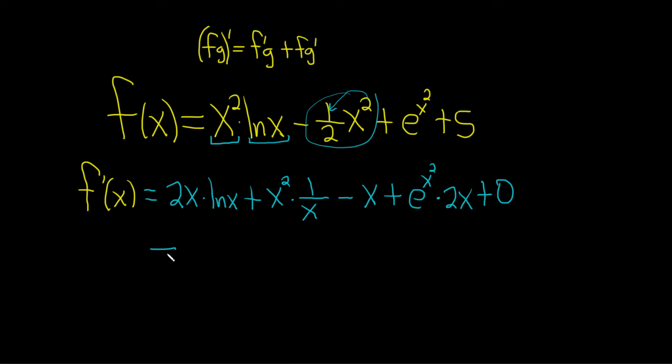So the final answer, let's clean it up. Oh look, this is x, right? So these will cancel. So you get 2x ln(x). x minus x is gone. These are gone. And then you get plus 2x e to the x squared. And that would be the final answer.